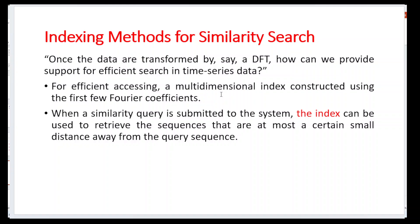For indexing methods in similarity search, once the data is transformed by discrete Fourier transforms or wavelet transforms, we can access a multi-dimensional index structure using the first few Fourier coefficients. When a similarity query is submitted, the index can be used to retrieve sequences that are within a certain distance from the query sequence — and also sequences that are very far away from the query sequence.